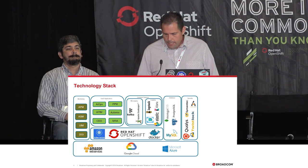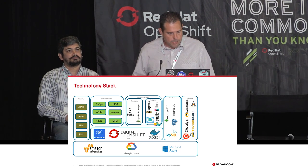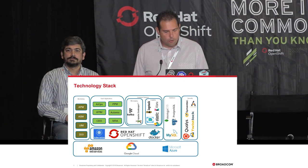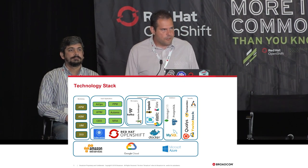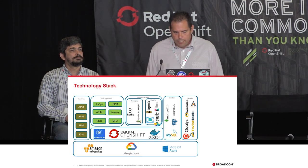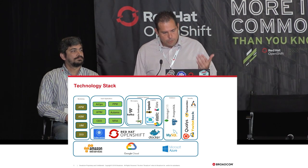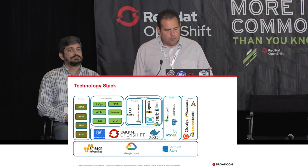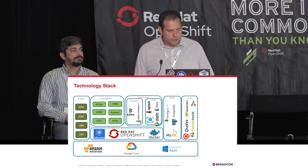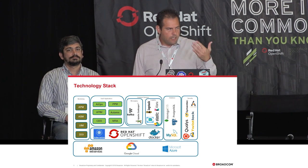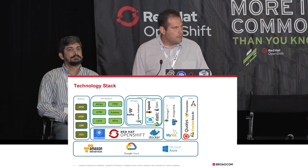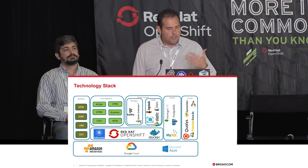Our technology stack, running in production, has common components starting with the infrastructure layer — various cloud providers, and VMware could be put in there as well. The ultimate goal was to be as flexible as possible in where we could deploy. Starting with that layer, then adding OpenShift on top with Docker and Kubernetes to host our services.